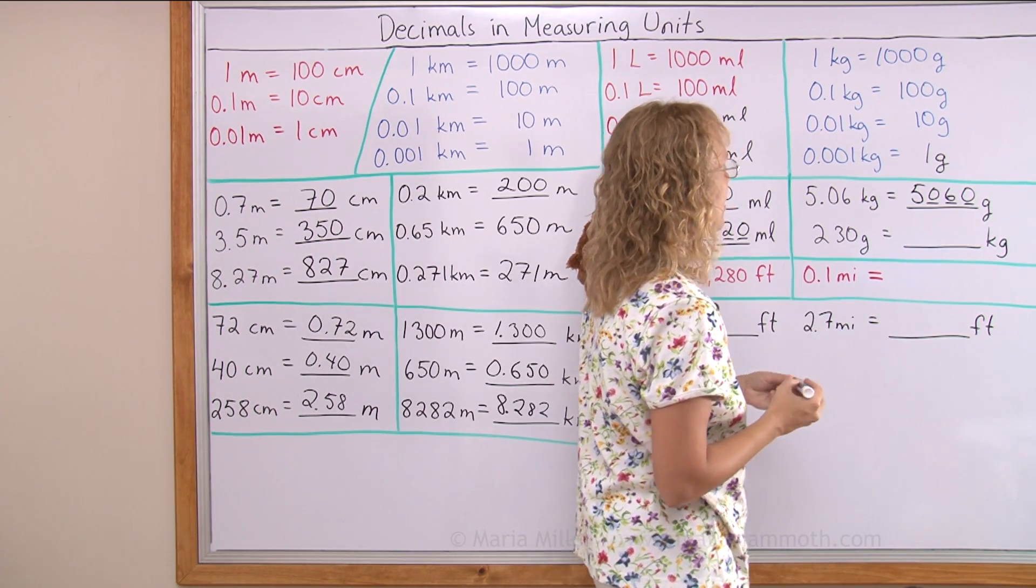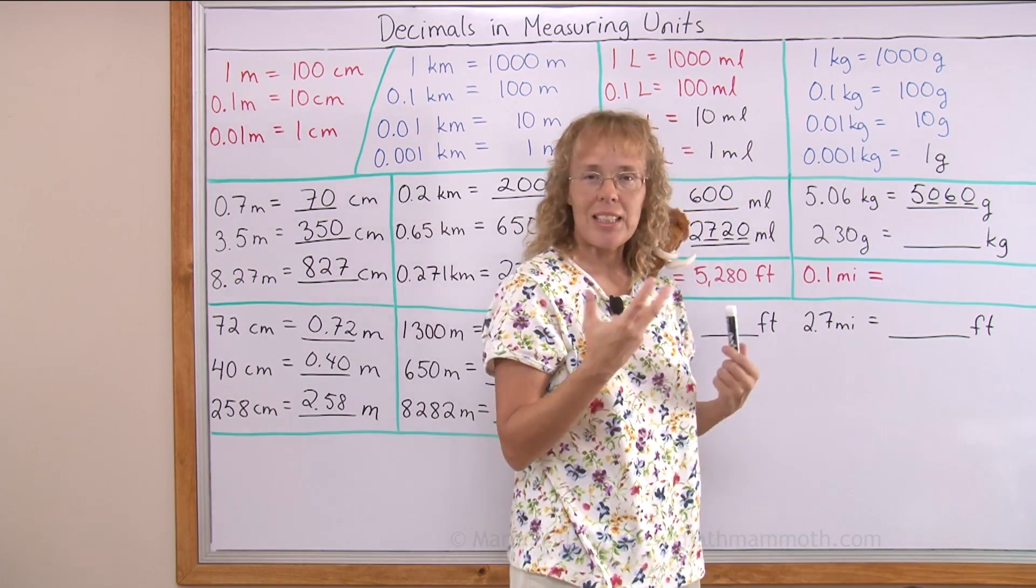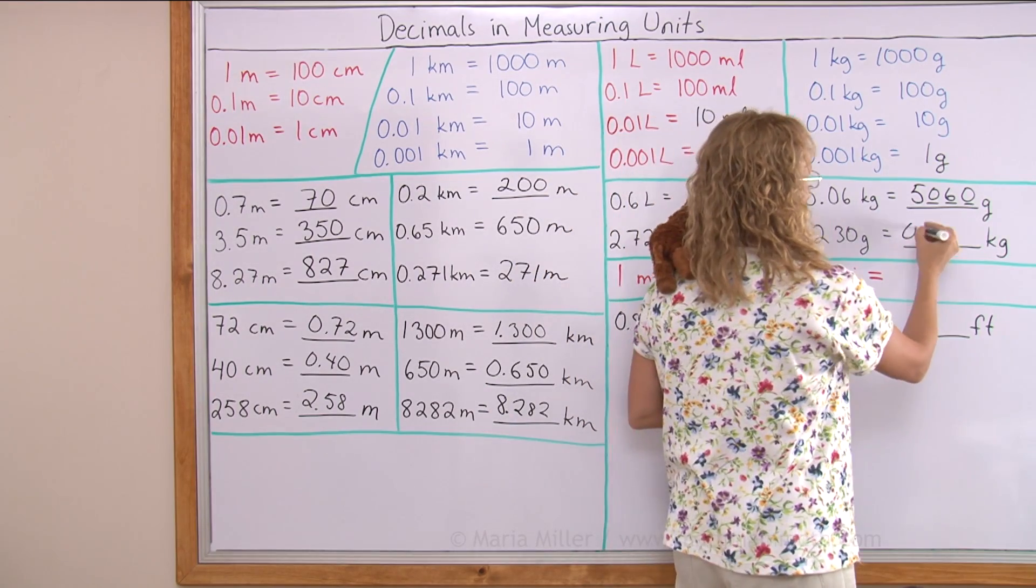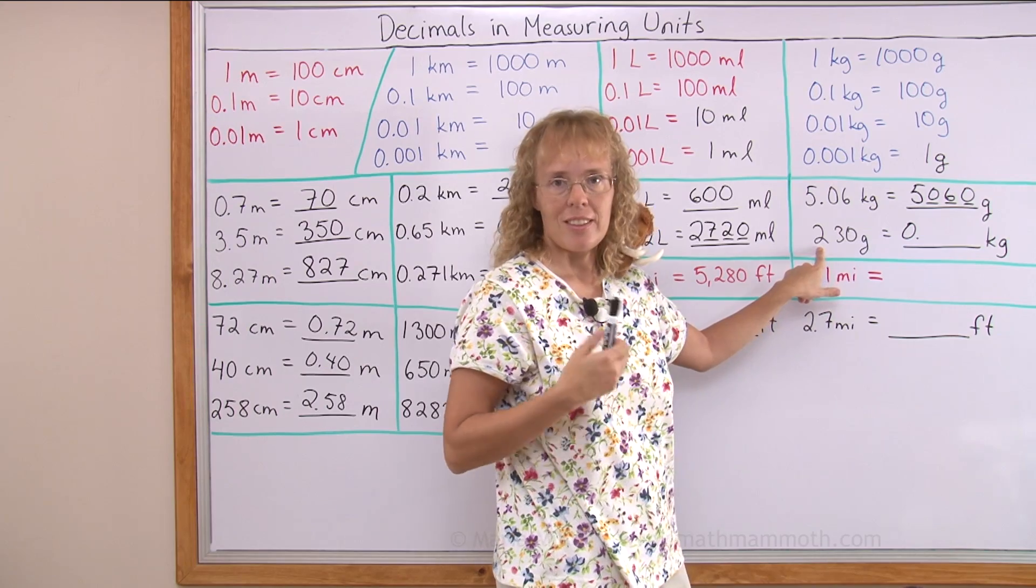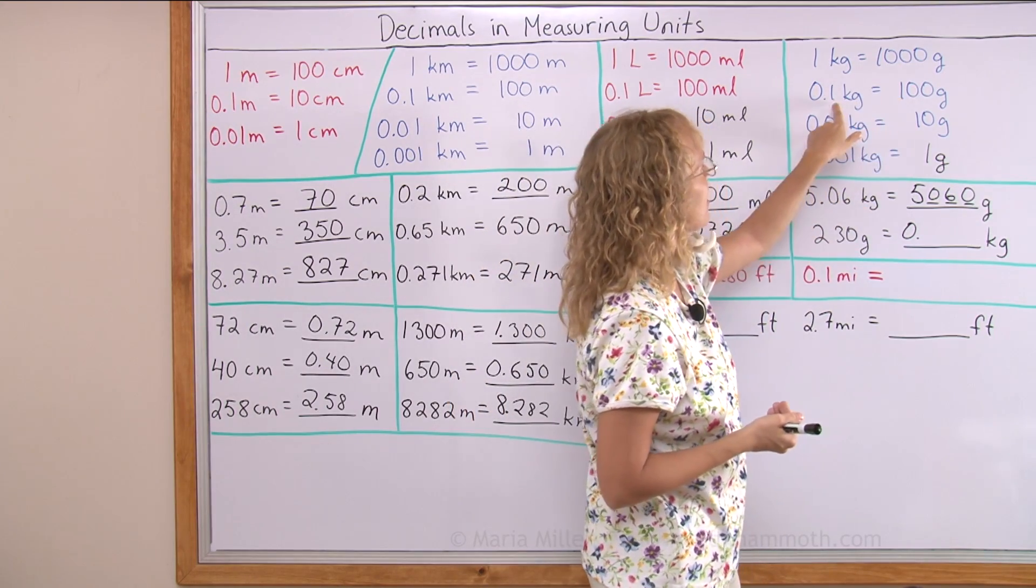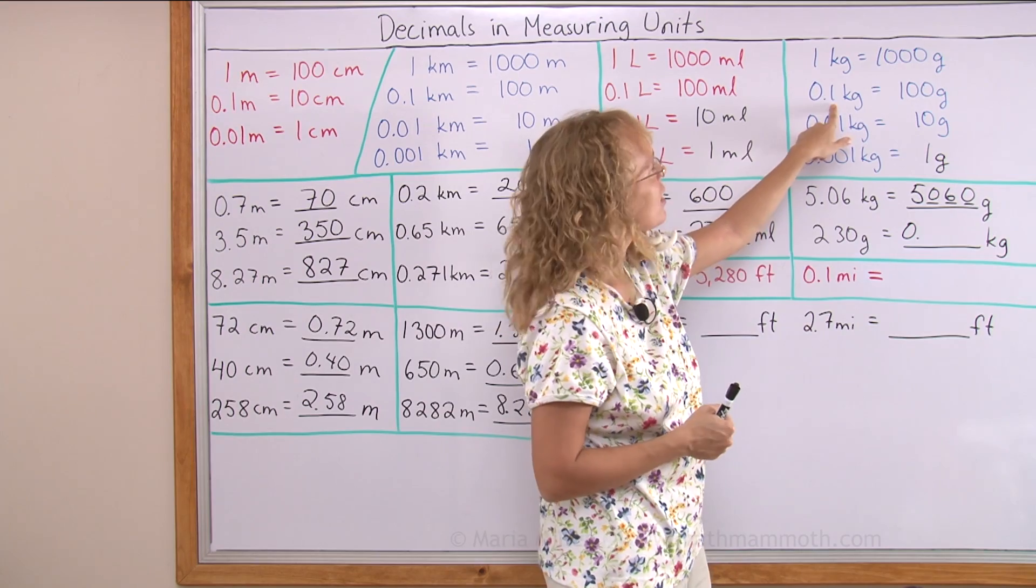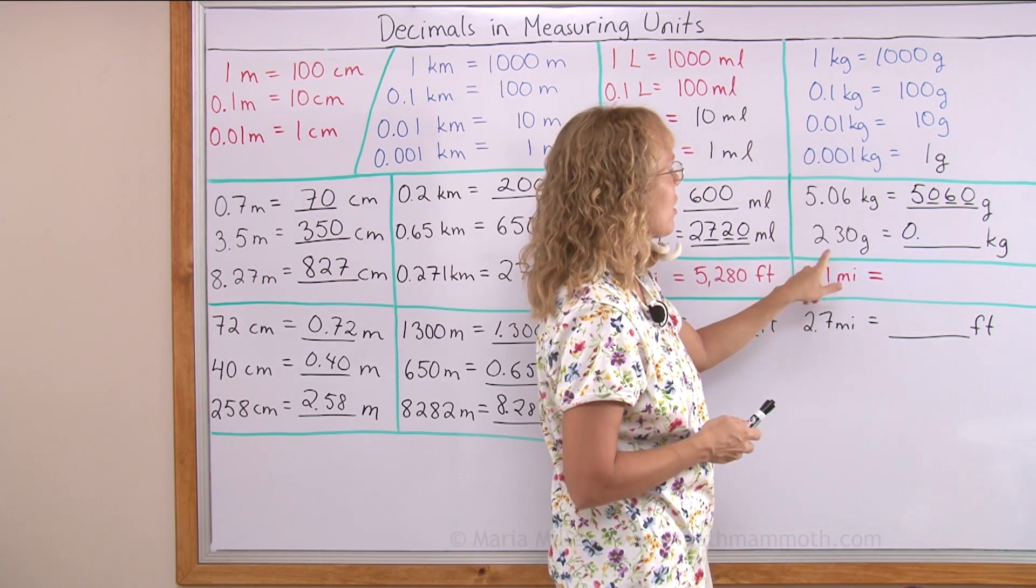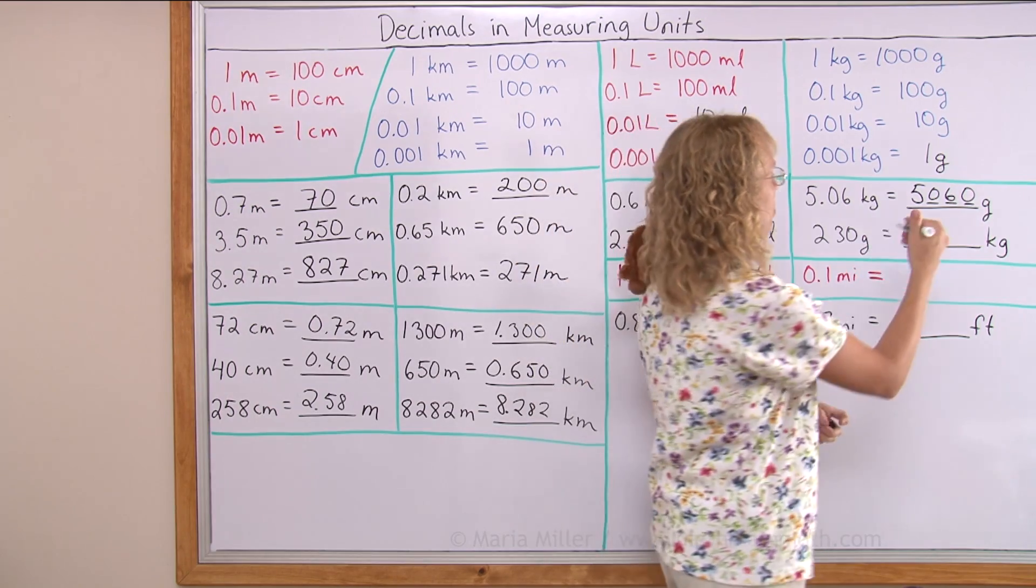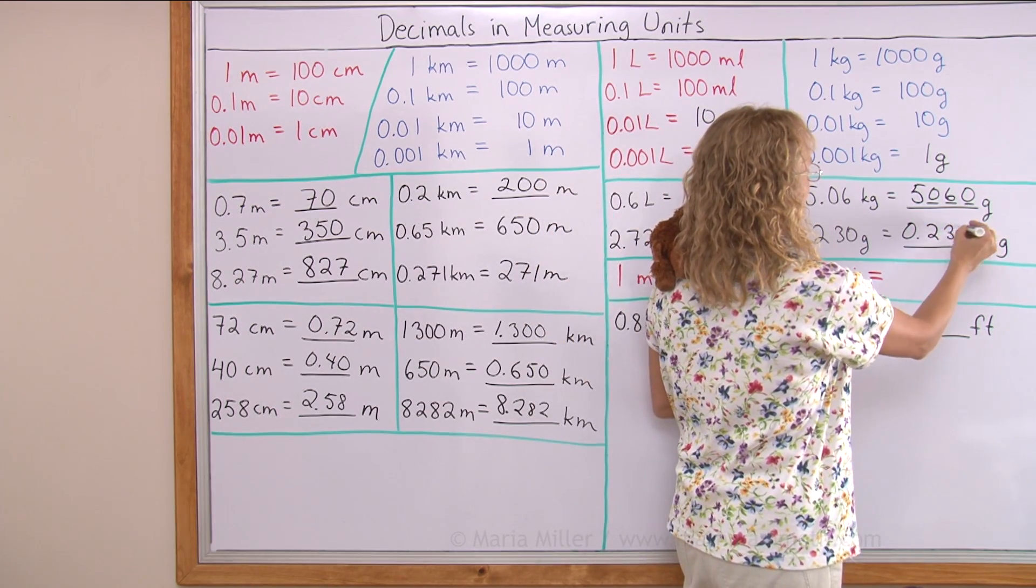And 230 grams is not quite a kilogram. It's less than a kilogram. I will have zero point something. Now 200 grams would be exactly two tenths of a kilogram. So these two must go to the tenths place. And so these three and zero follow.